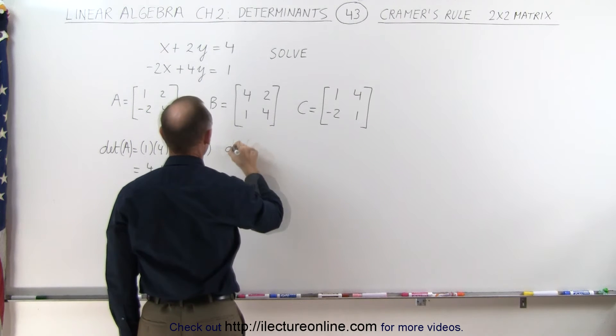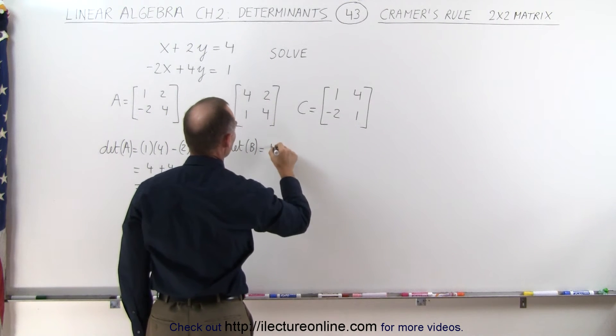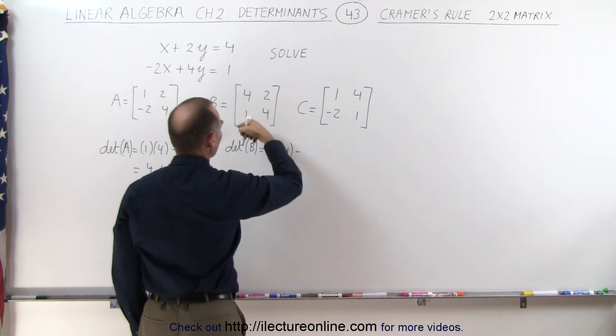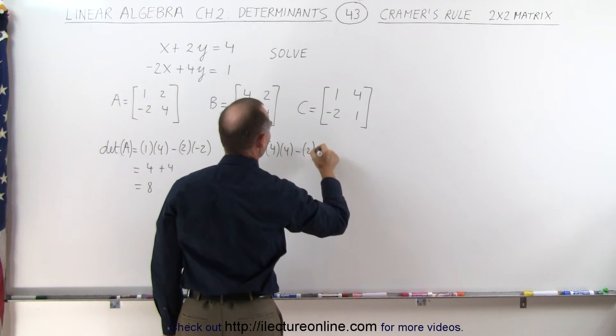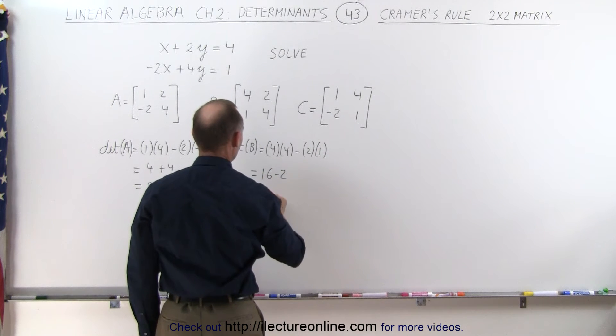The determinant of B can be found by taking this product here, 4 times 4, and subtracting the product here, 2 times 1, which is equal to 16 minus 2, which is equal to 14.